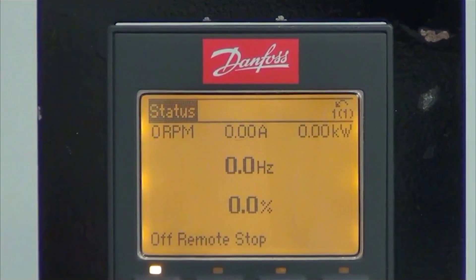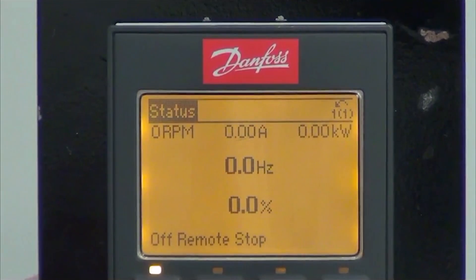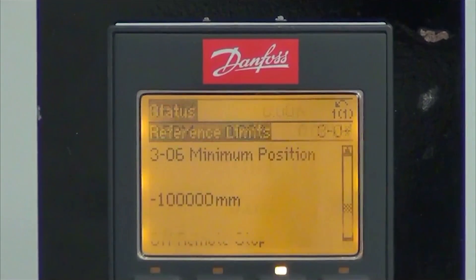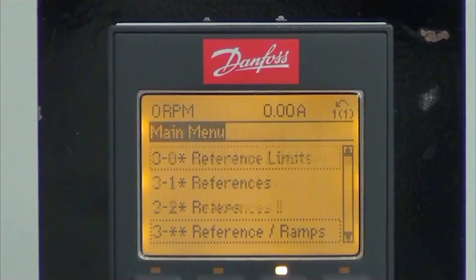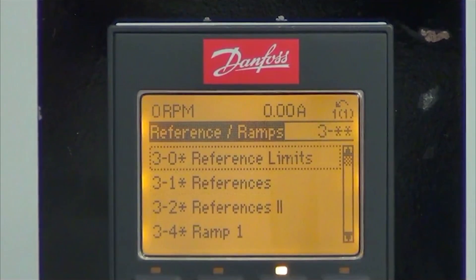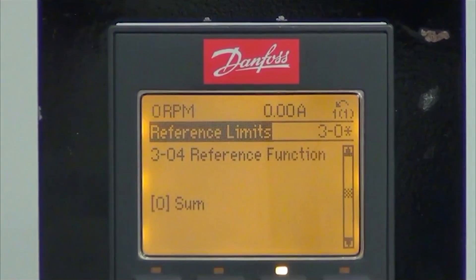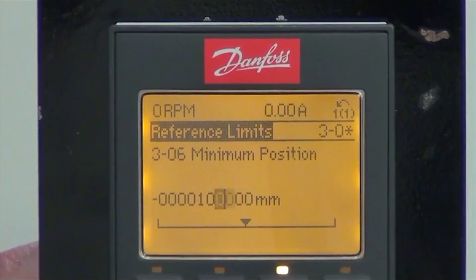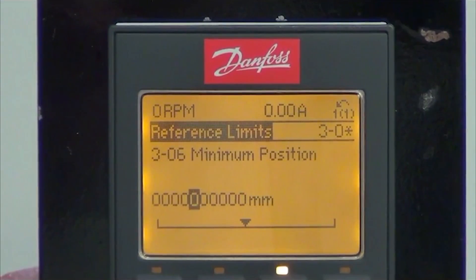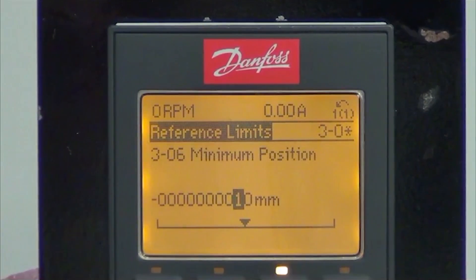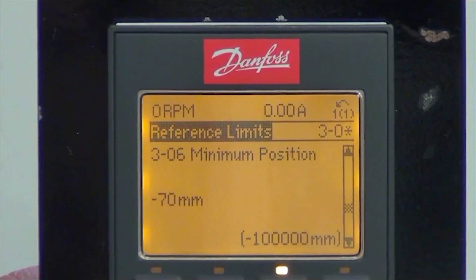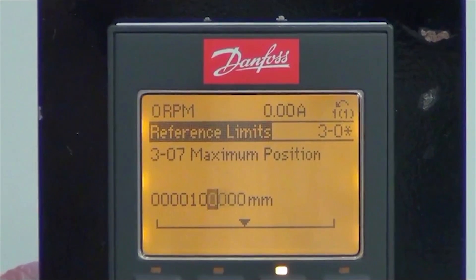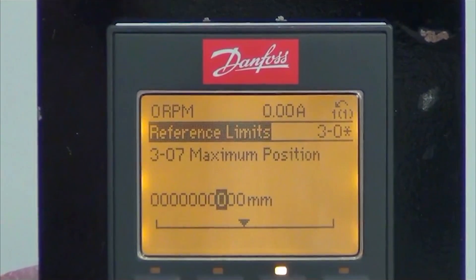Next step is to define the area of movement by setting up a minimum and a maximum position. I will go into group 3, references and ramps. Then we will go to parameter 306, which is our minimum position. Default is minus 100,000. We will set it to minus 70. Then we will go to maximum position, which is set to plus 100,000. We will set that to 150 millimeters.